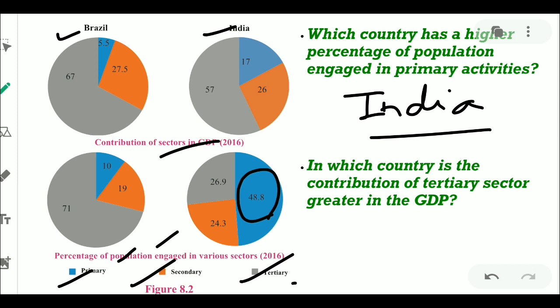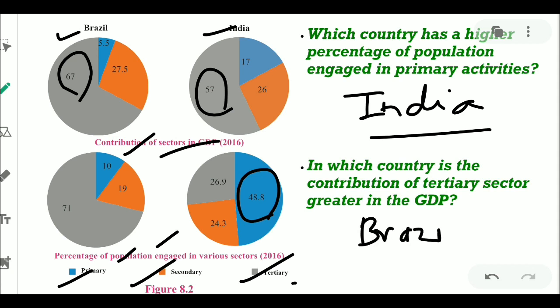Second question: in which country is the contribution of the tertiary sector greater in the GDP? We will look at the tertiary sector, shown in ash color. India has 57% whereas Brazil has 67%. Hence the answer for this question is Brazil.